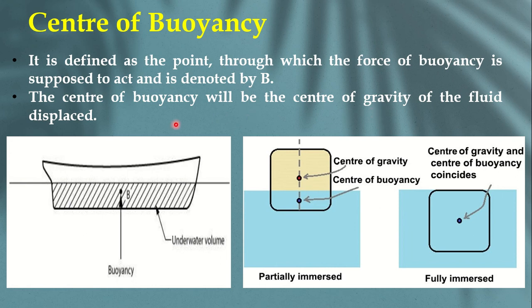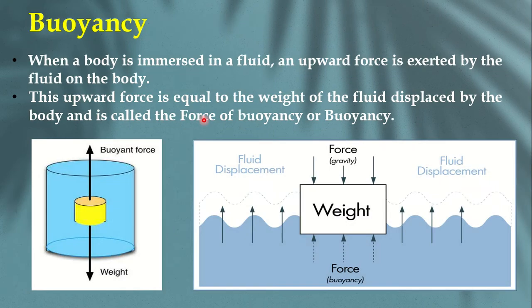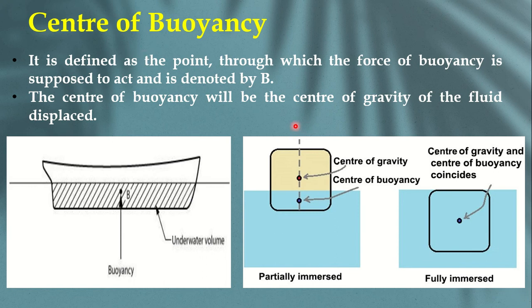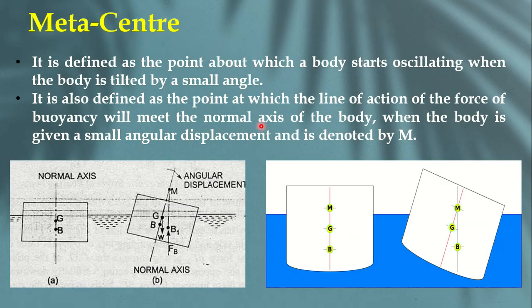To locate the center of buoyancy, you just find the center of gravity of the fluid that was displaced. So: if you want to know the value of the force of buoyancy, take the weight of the displaced fluid; if you want to know the position of the center of buoyancy, find the center of gravity of the displaced fluid. Next comes the meta center.